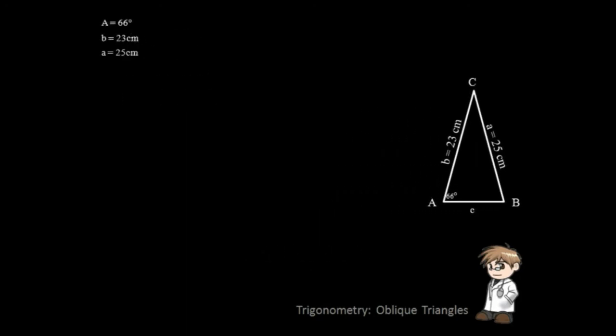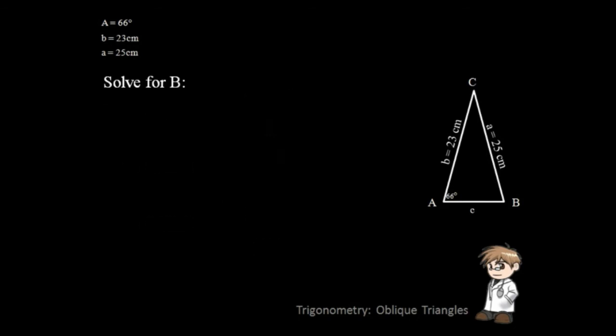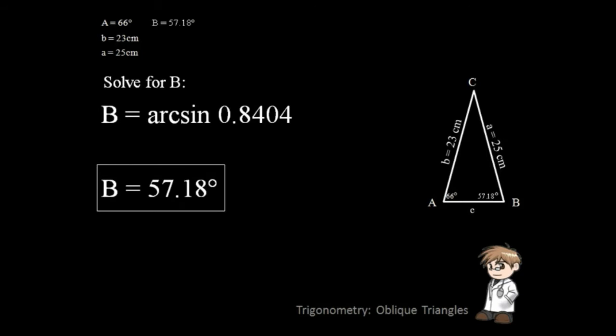Let's proceed in solving angle B. We will still use the law of sines, but this time we will use this equation. Always remember to use the equation that uses the unknown as the numerator for easier solving. Deriving the equation, we will have this solution. Now we have angle B.